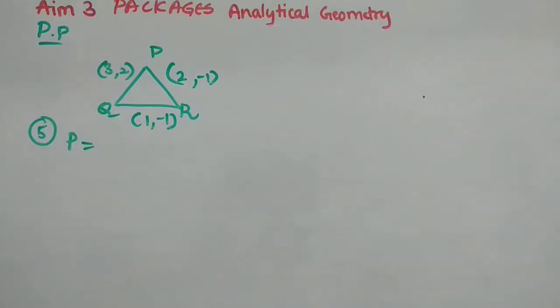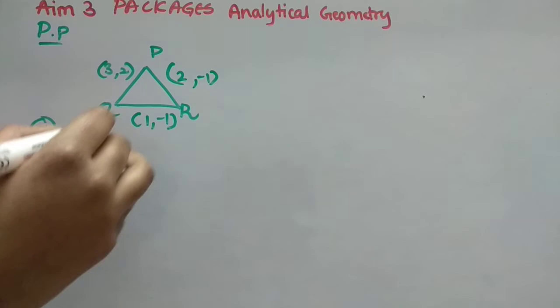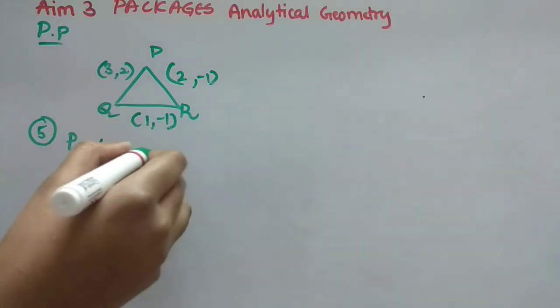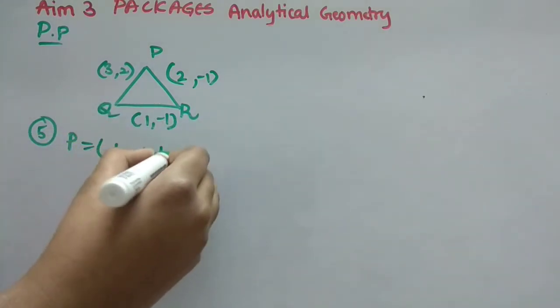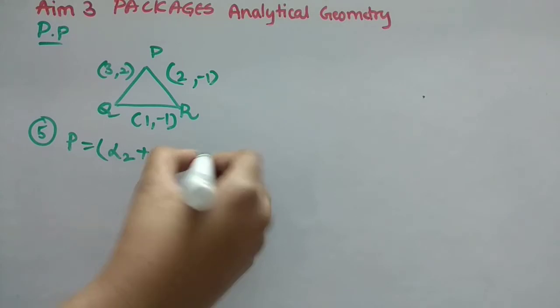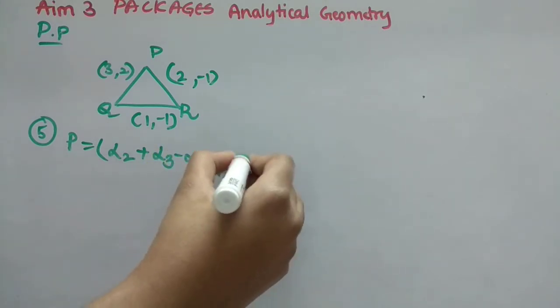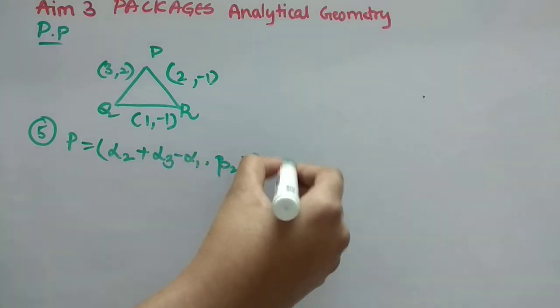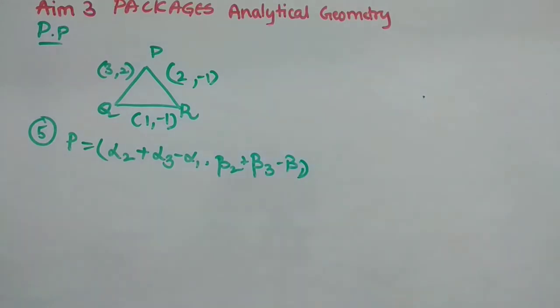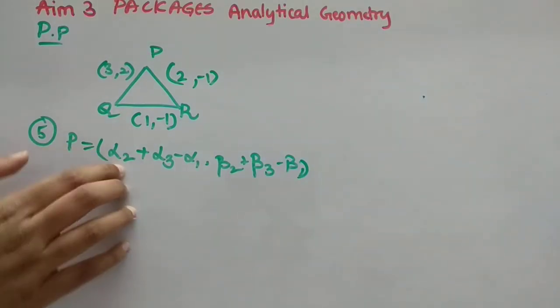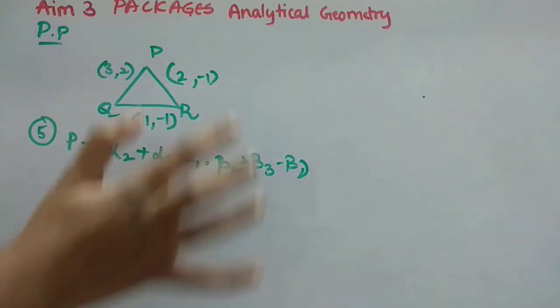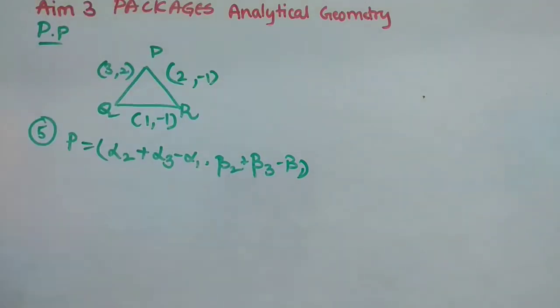So fifth one, P. What is the P formula? It is alpha 2 plus alpha 3 minus alpha 1 comma beta 2 plus beta 3 minus beta 1. How, what is this beta? Now you will be thinking. Nothing. Alpha means X, beta means Y. This is, that's it. Simple.